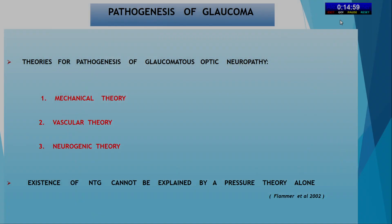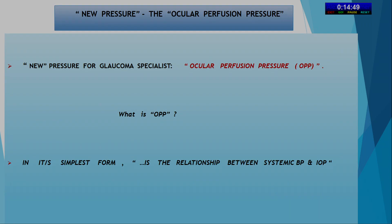Good morning everyone. Theories for pathogenesis of glaucomatous optic neuropathy have been mechanical, vascular, and neurogenic. But the existence of normotensive glaucoma cannot be explained by a pressure theory alone. This introduced a new pressure for the glaucoma specialist: ocular perfusion pressure. In its simplest form, OPP is the relationship between systemic blood pressure and intraocular pressure. Van Jaeger was the first to suggest a vascular etiology for pathogenesis of glaucoma, attempting to explain it on the basis of reduced OPP, faulty vascular autoregulation, and loss of neurovascular coupling.